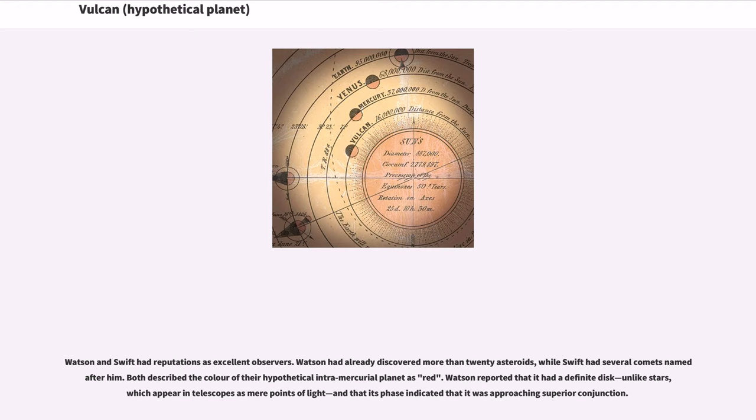Watson and Swift had reputations as excellent observers. Watson had already discovered more than 20 asteroids, while Swift had several comets named after him. Both described the color of their hypothetical intramercurial planet as red. Watson reported that it had a definite disk, unlike stars, which appear in telescopes as mere points of light, and that its face indicated that it was approaching superior conjunction.